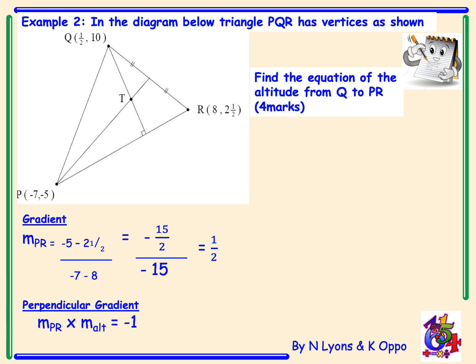Our perpendicular gradient: writing down our perpendicular rule, the gradient of the altitude would be minus 2. Flip the fraction 1 over 2 and change the sign. We are going to use this gradient m equals negative 2 and the point Q, which is a half, 10, to find the equation of the altitude.